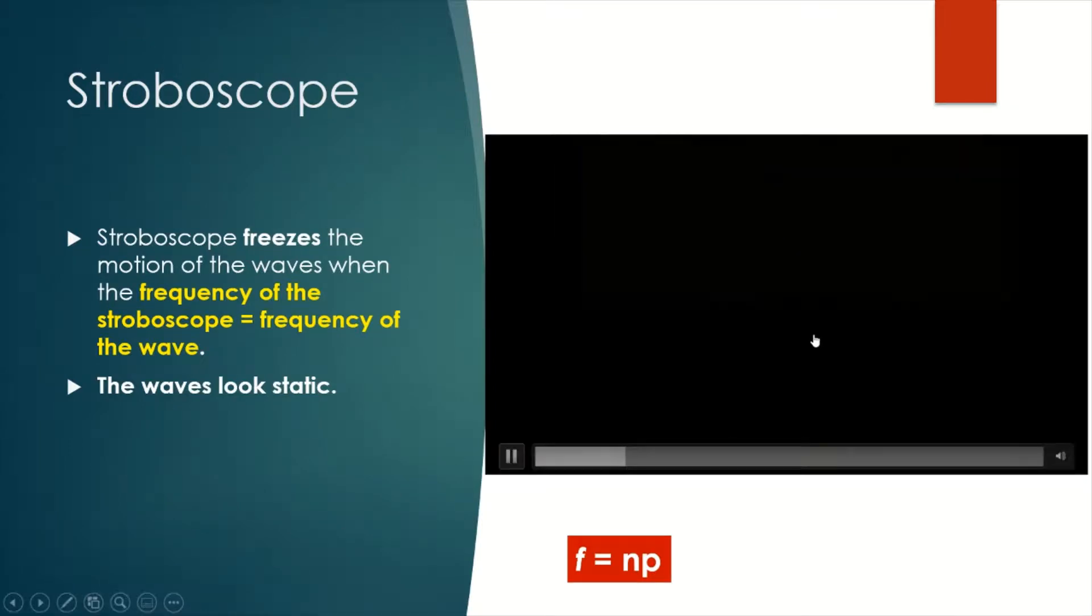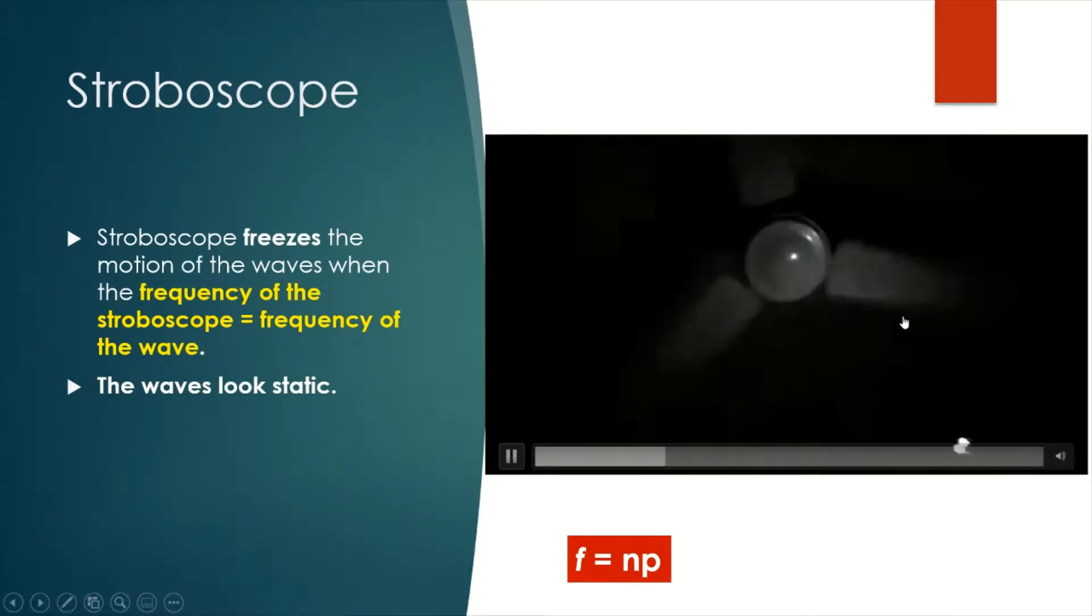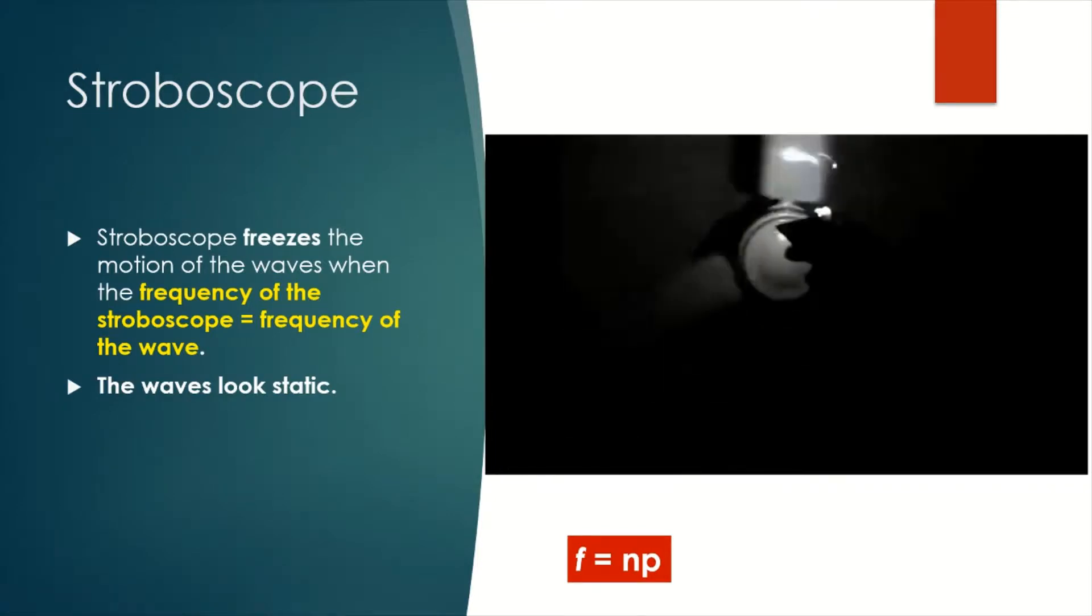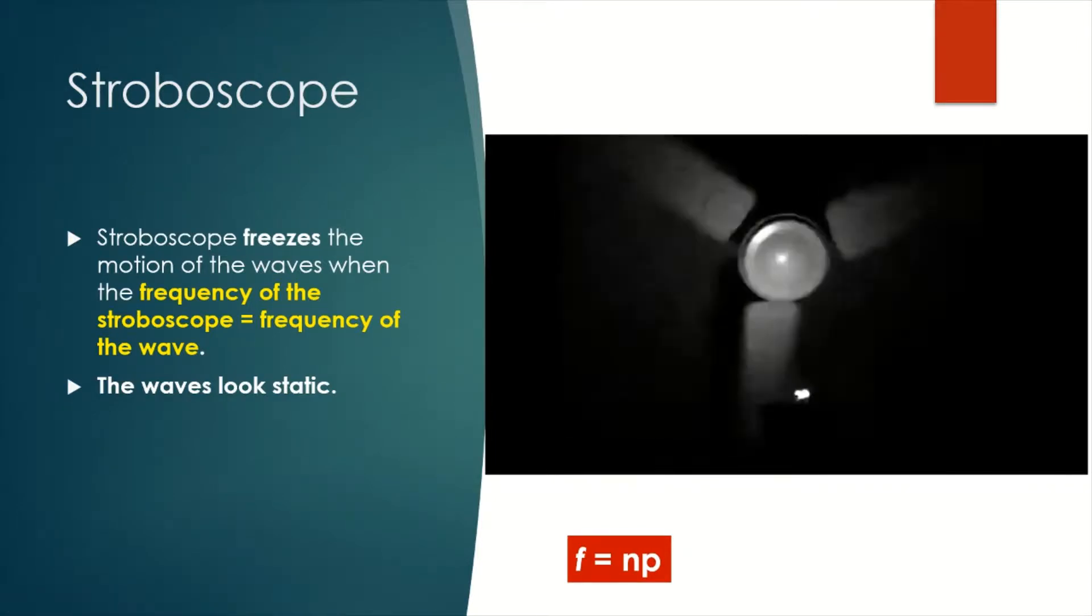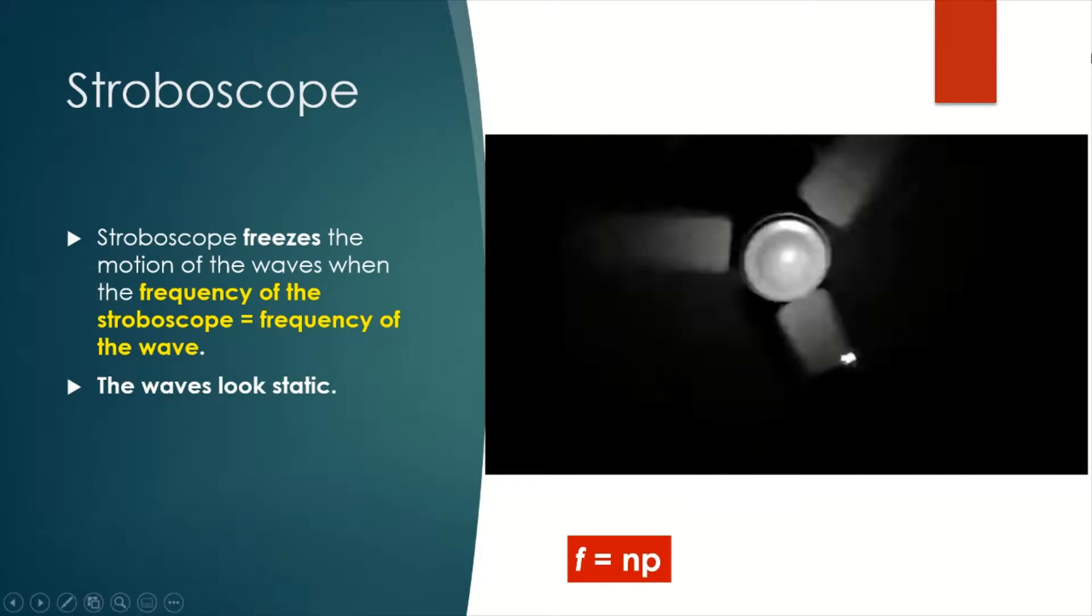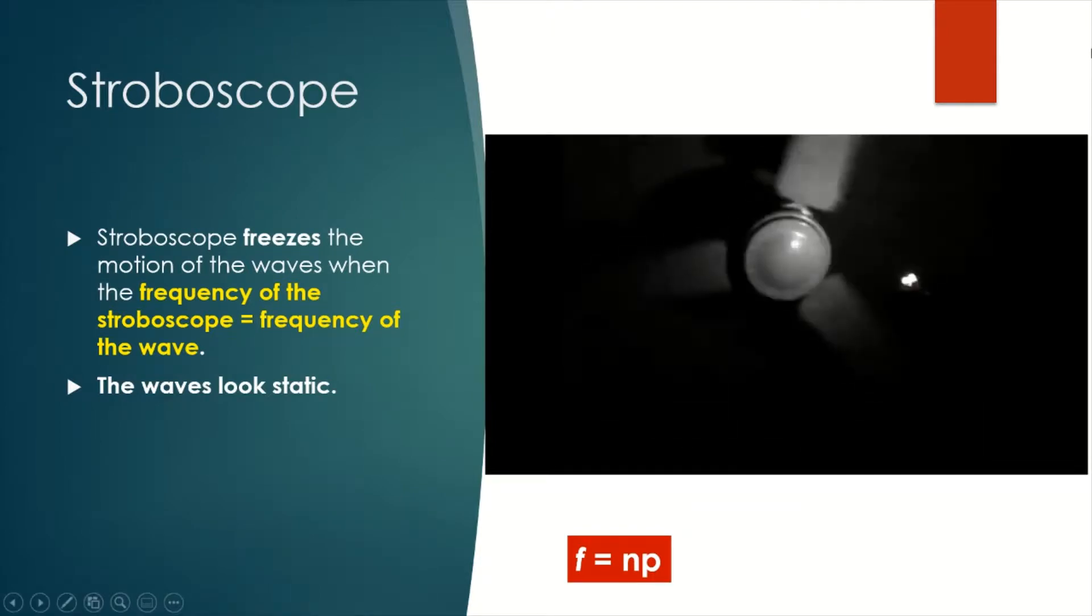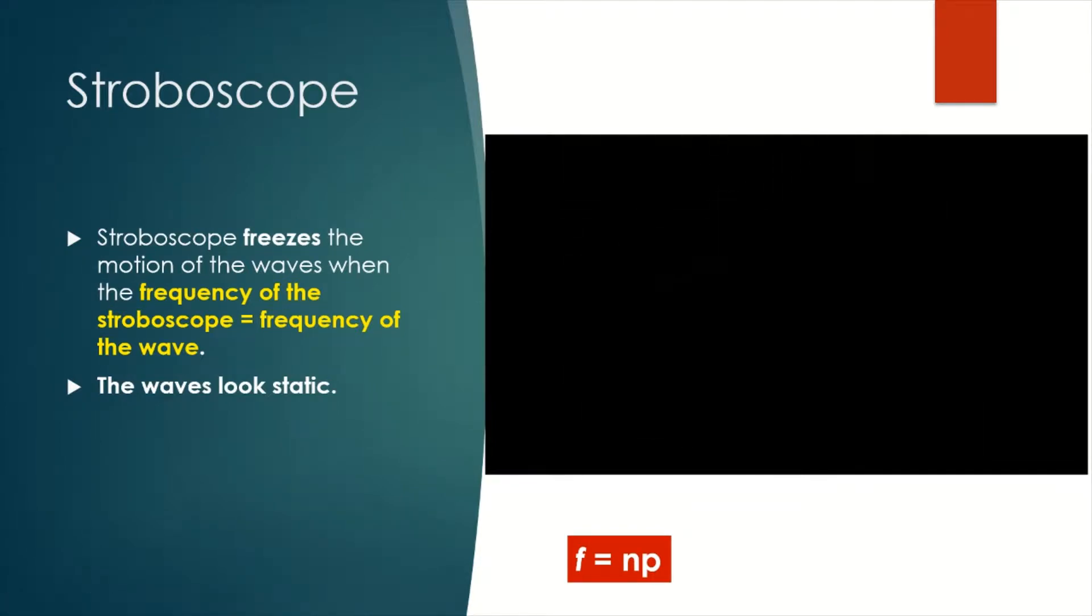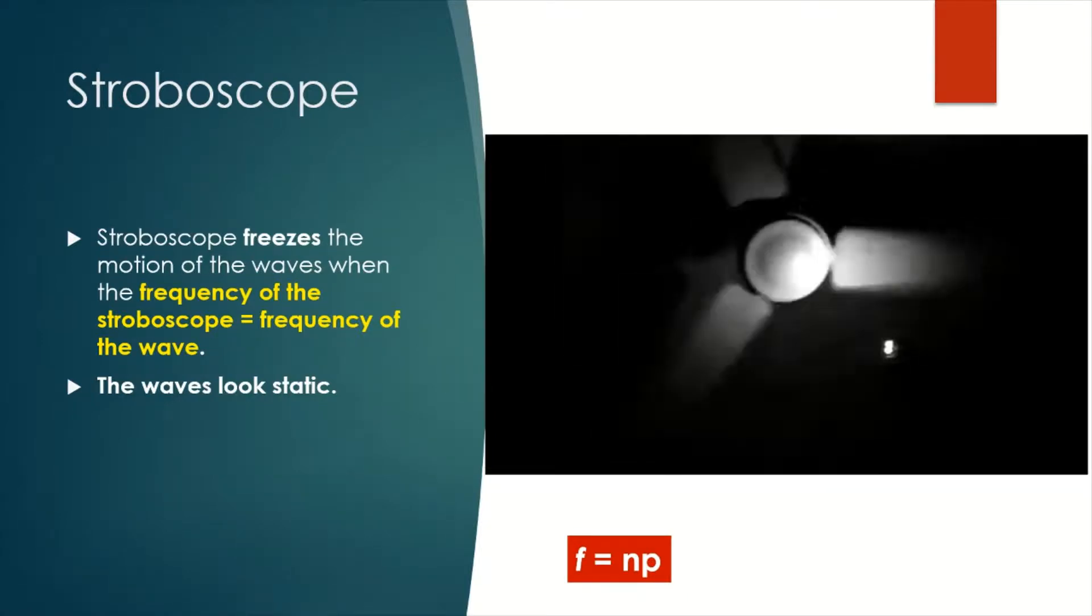When it is viewed through the stroboscope, the motion of the spinning fan can be changed and slowed down until it becomes static. When it becomes static, this is what we call the motion has been frozen.